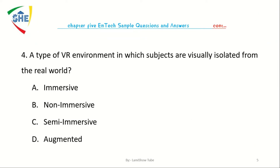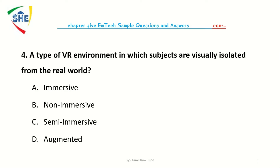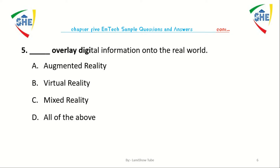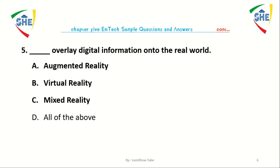Question number 4: A type of virtual reality environment in which subjects are visually isolated from the real world is called dash. Options: A) Immersive VR, B) Non-immersive VR, C) Semi-immersive VR, D) Augmented VR, E) All of the above.